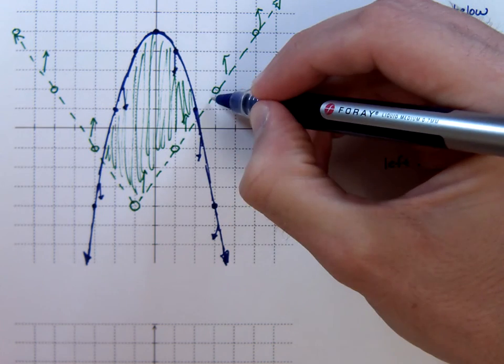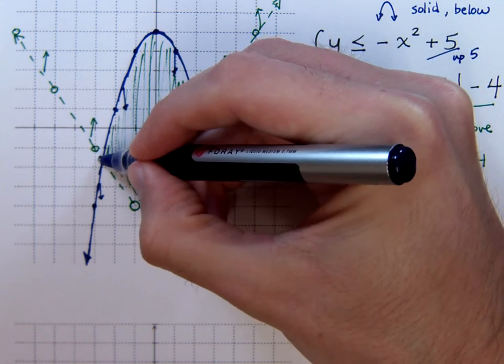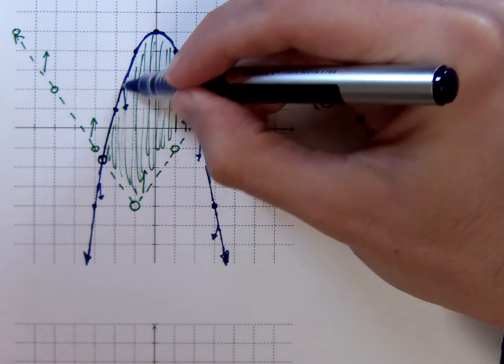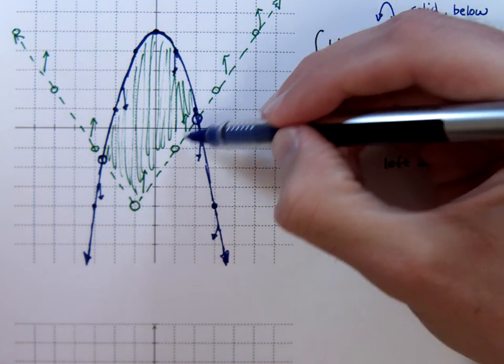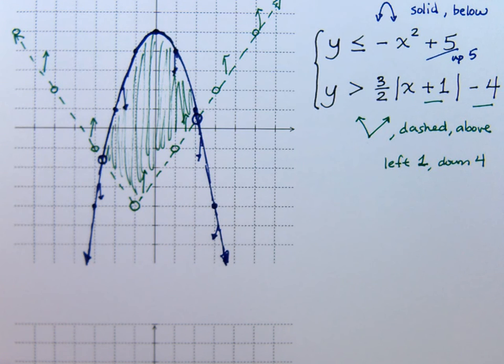At the intersection points would be where I'm on both the parabola and the absolute value. Since the absolute value is not included, this guy will not be able to be included either. So anything touching this parabola, below it, and getting as close to this absolute value as you want, will be our solution set.